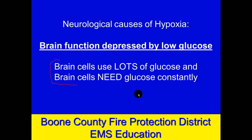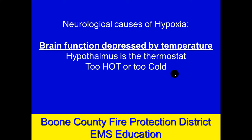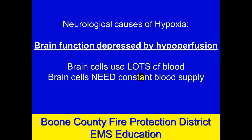Your brain needs lots of glucose, and it needs it all the time. Lack of sufficient glucose to the brain means brain cells can't make energy, which means they don't function well, which means they don't control the cardiovascular and respiratory systems well, and that can lead to hypoxia. Same thing with temperature — whether it's heat stroke or hypothermia, whether the brain is too hot or too cold. The brain doesn't function well, so it doesn't do its controlling well. The thermostat for your body is the hypothalamus, located in your brain, so environmental causes or fever can cause the entire body temperature regulation mechanism to not work well.